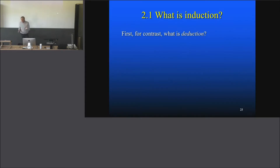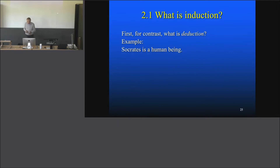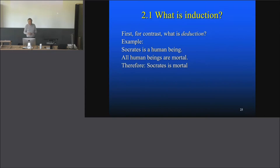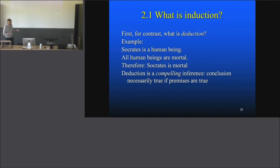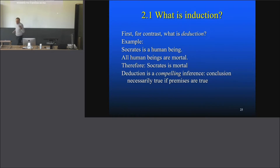This is what you're all familiar with. Deduction — the example is 2,500 years old: Socrates is a human being; all human beings are mortal; therefore, Socrates is mortal. This is one of these deductive inferences, and they have the property that deduction is compelling. The conclusion is necessarily true if the premises are true. So if you buy into the premises, you have to buy into the conclusion.